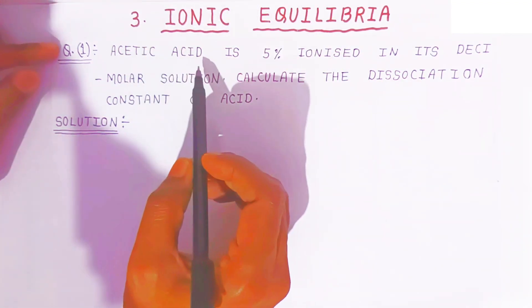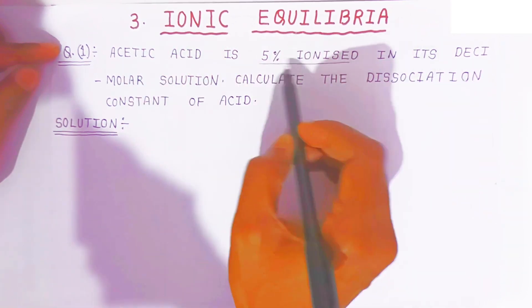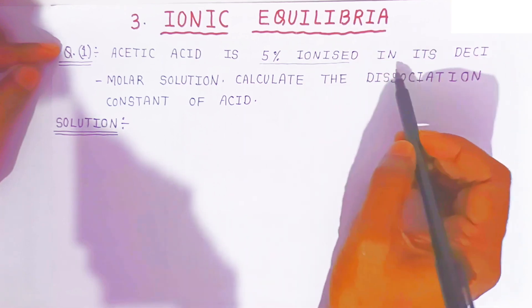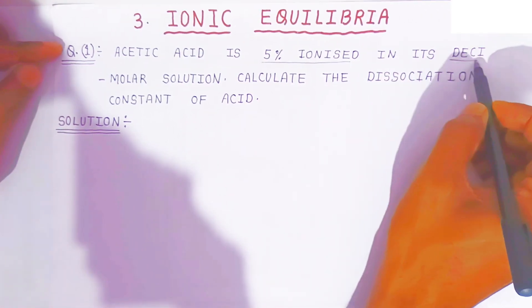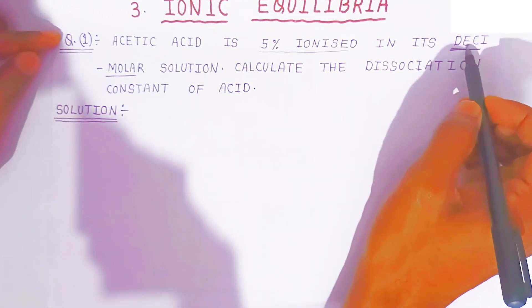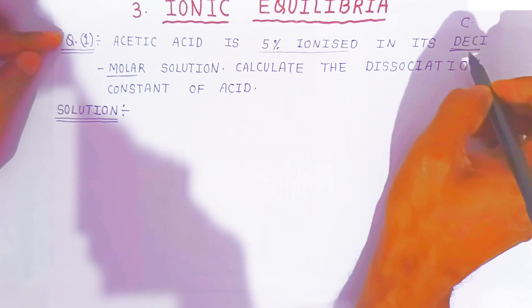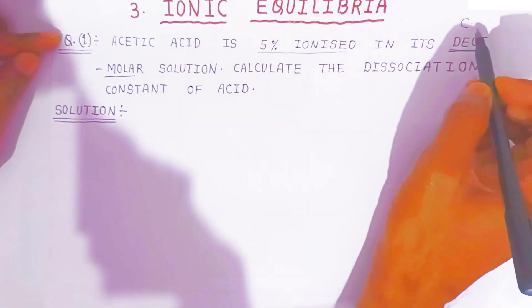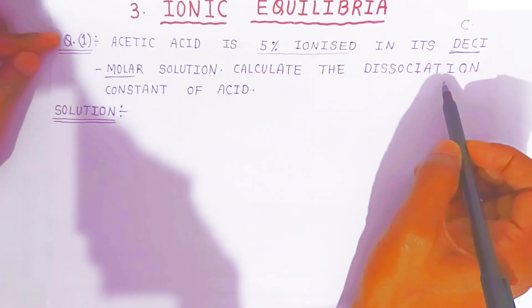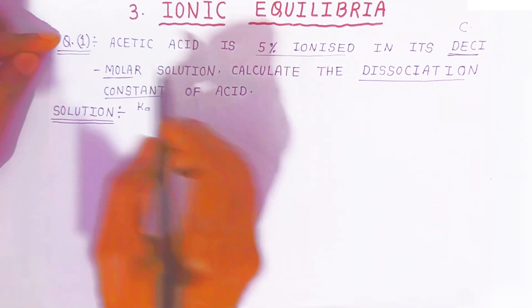The first question is: acetic acid is 5% ionized. The dissociation constant of acetic acid is given — percent dissociation is 5%, in its decimolar solution. Decimolar means 1 mol divided by 10, that is 0.1 molar. We have to calculate the dissociation constant, that is Ka of acetic acid.